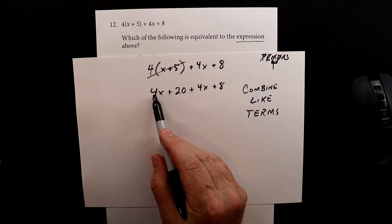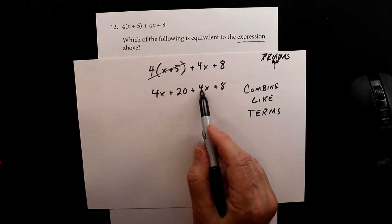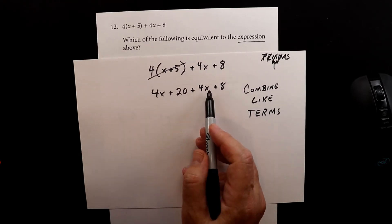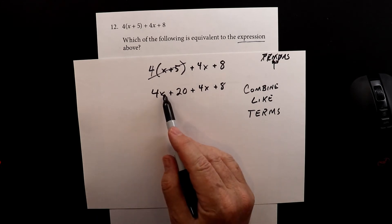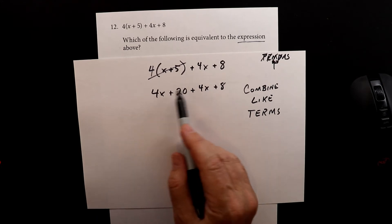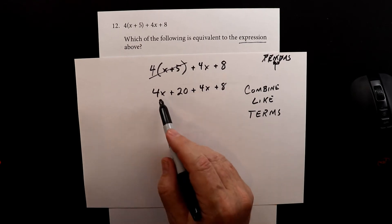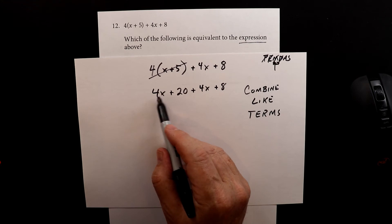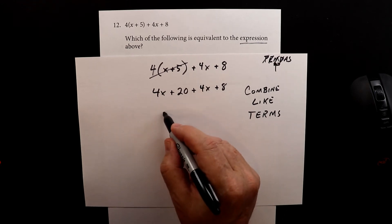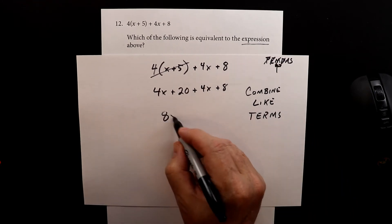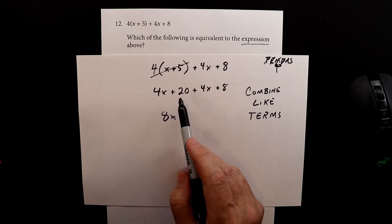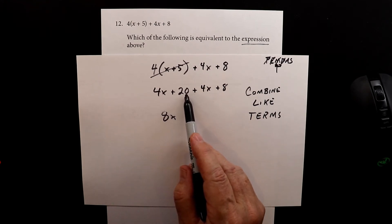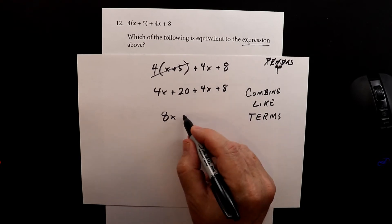I notice that we have 4x, which is 4 times x, and I have another 4x. When they have the same variable and the same exponent — both are x to the first — you can put them together by just adding. So 4x plus 4x combines to 8x. Then we have constants: 20 plus 8 is 28.